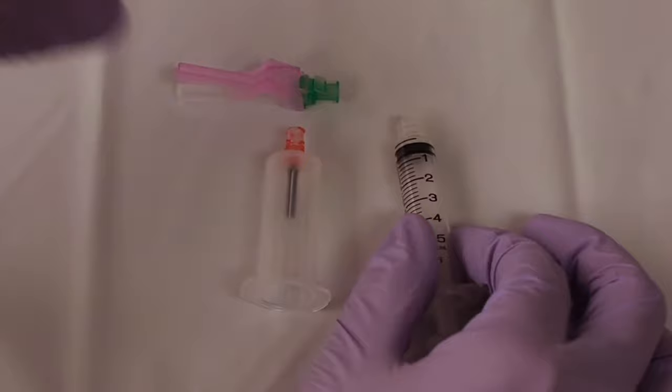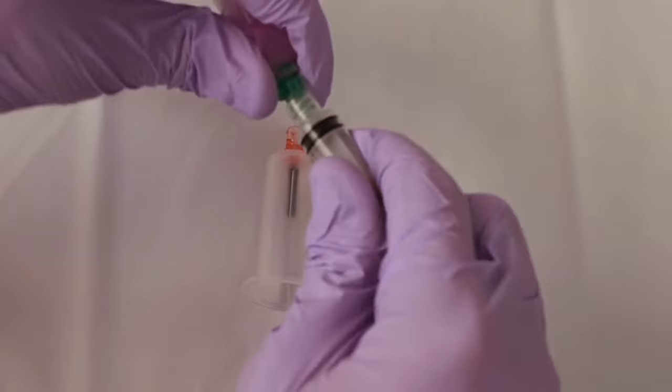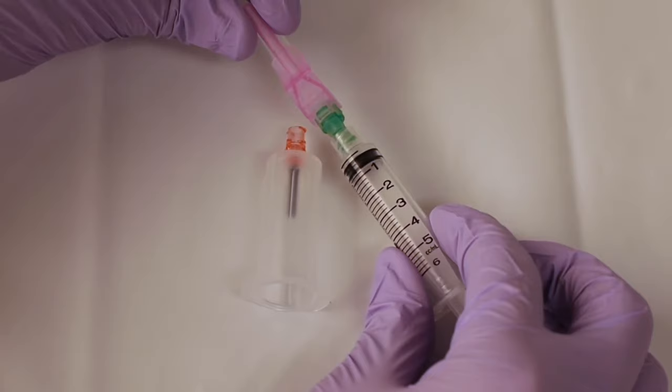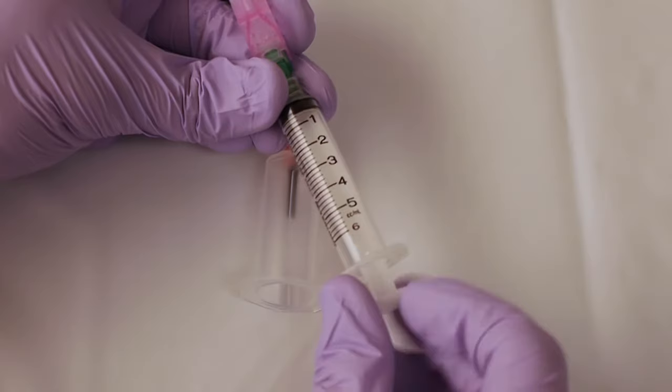So first of all, we're going to take the needle, we're going to attach it to the syringe. When you get ready to do the draw, first we're going to pull back on the plunger, loosen it up a little bit.